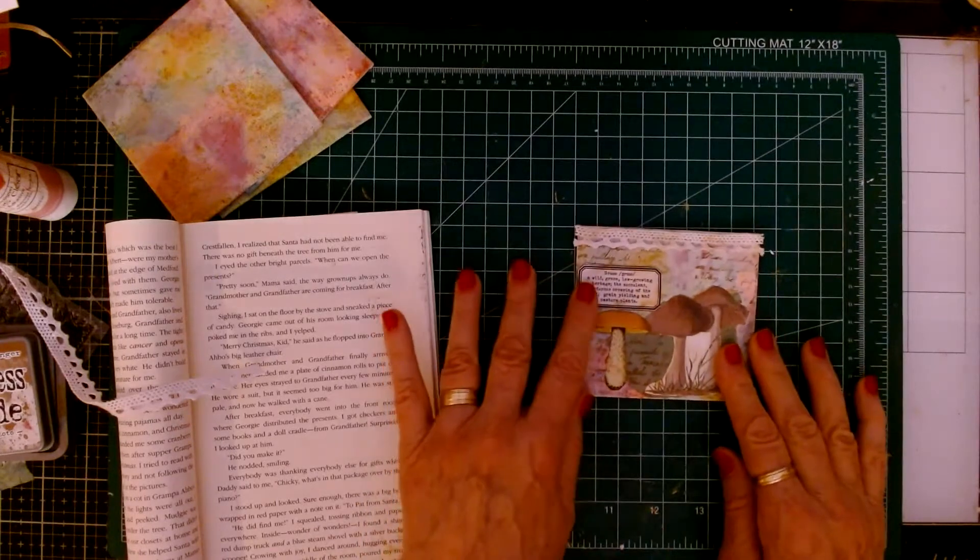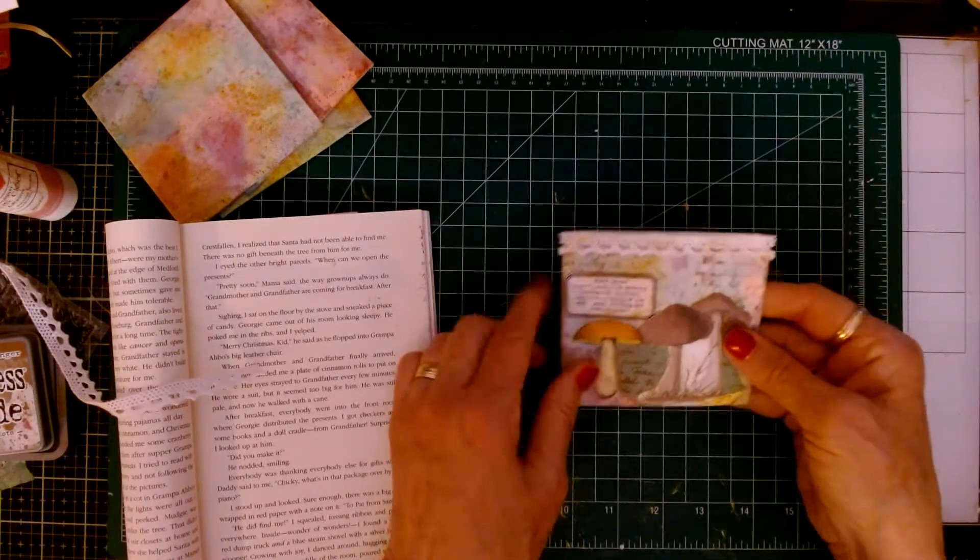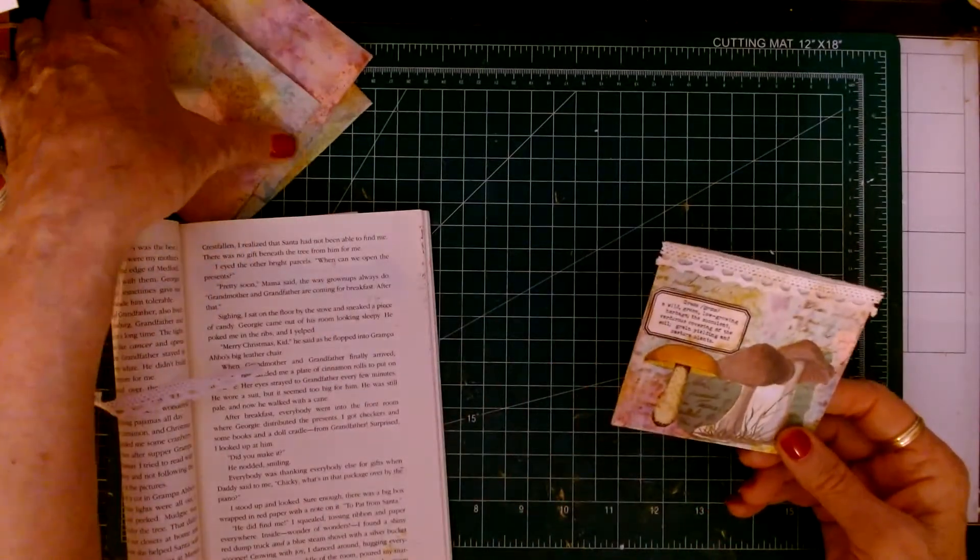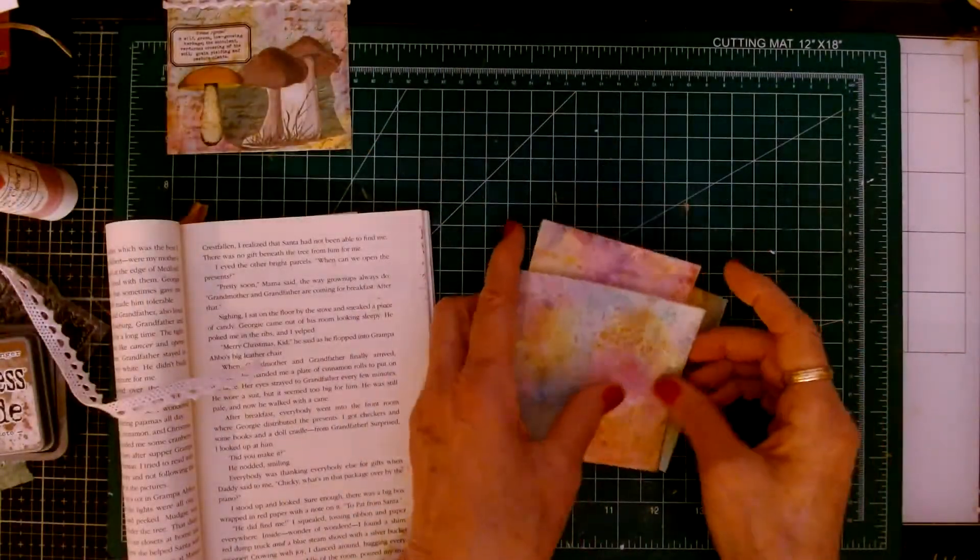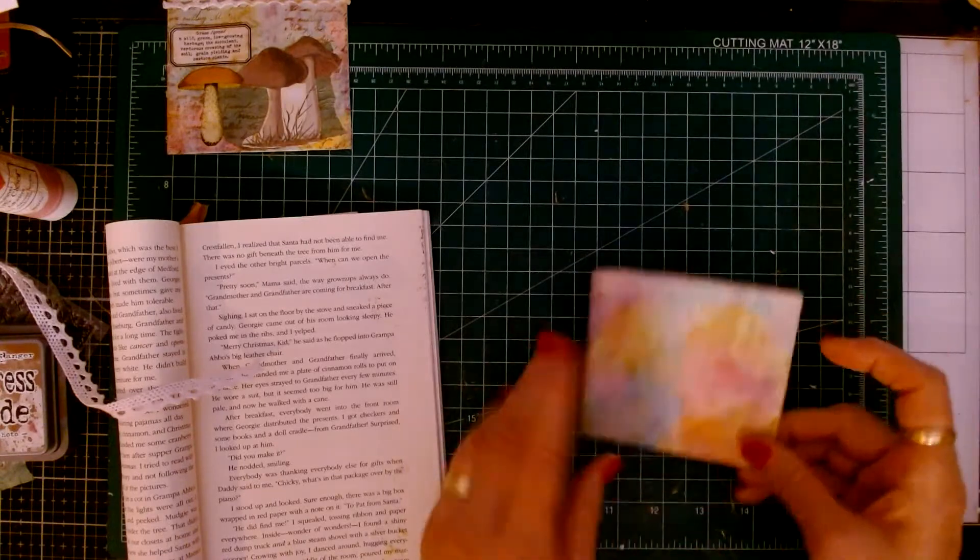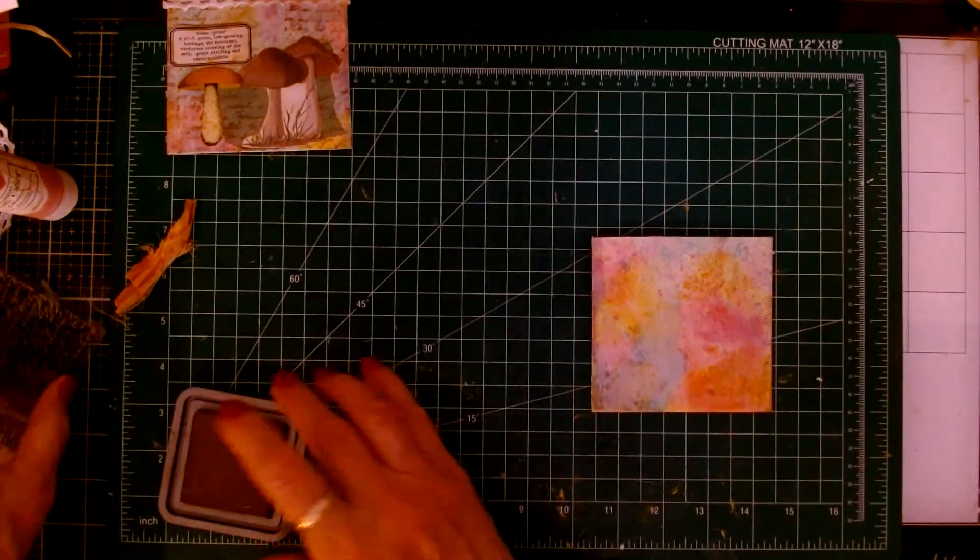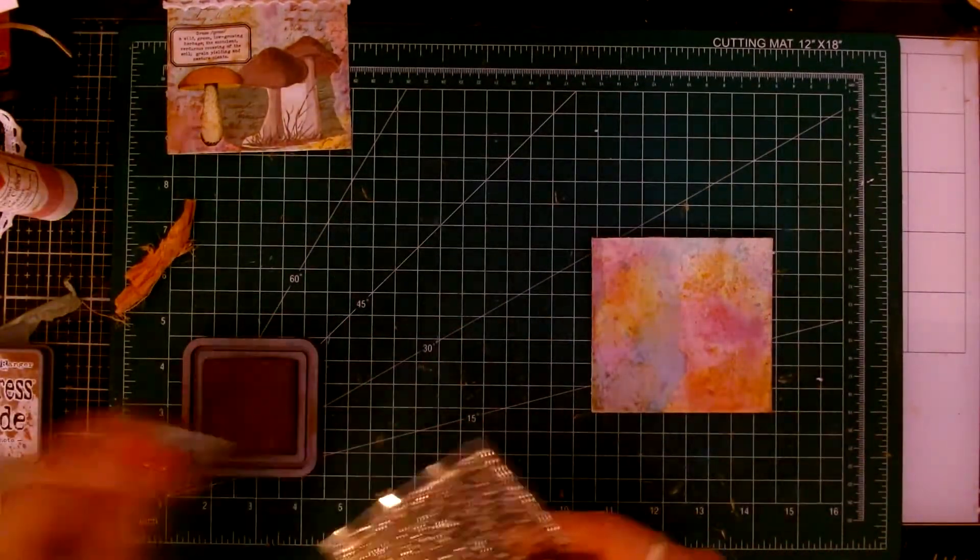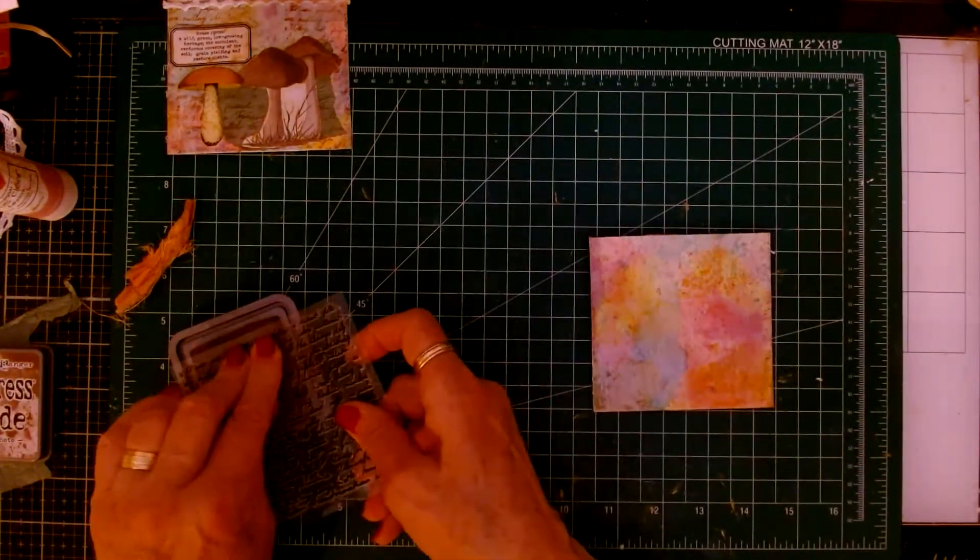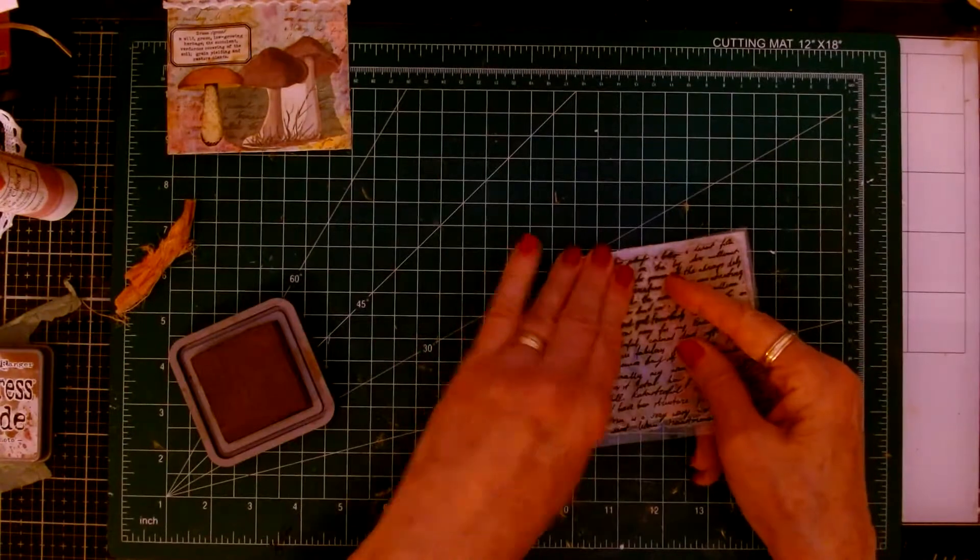And what I'll probably do is put it in a journal and just hook it in on two sides and then leave that option for a journaling card behind there. So here's a pocket for a journaling card. And I'll bring this one in and I think what I want to do is put script on all of them. I just love script on top of this paper, on the inking paper.